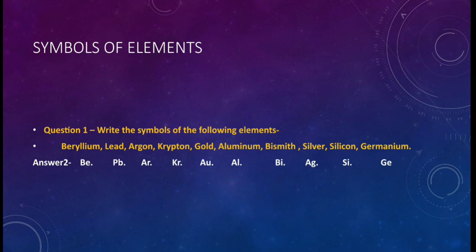Symbols of elements. Question number one. Write the symbols of the following elements: beryllium, lead, argon, krypton, gold, aluminum, bismuth, silver, silicon, germanium. So this is the question. You have to write the symbol of the following elements. First of all, I want to tell you that you need to learn as many symbols as you can from the periodic table which I have already given in the lesson. In the first lesson of the same chapter I have given you. So you have to learn as many symbols as you can from the periodic table with the name of the element.